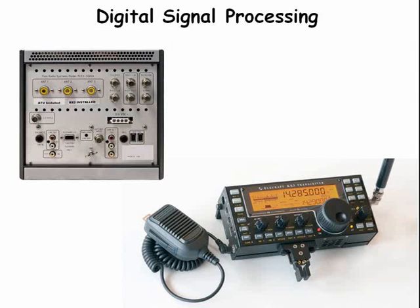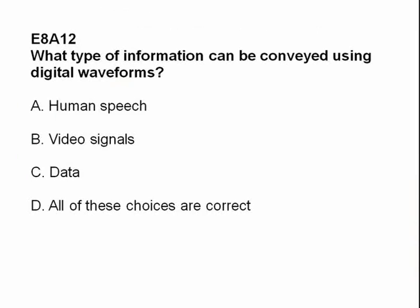Here are some examples of commercial radios that use digital signal processing. What type of information can be conveyed using digital waveforms? A: human speech; B: video signals; C: data; or D: all of these choices are correct. The answer is D — all of these choices are correct.